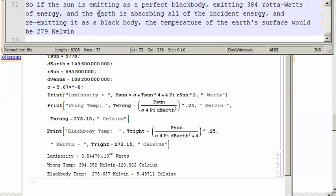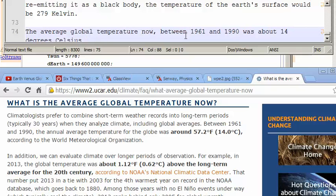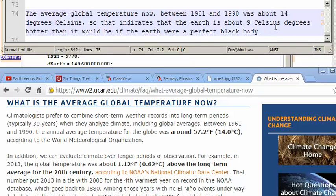So if the Sun is emitting as a perfect black body, emitting 384 yotta watts of energy, and the Earth is absorbing all of the incident energy and re-emitting it as a black body, the temperature of the Earth's surface would be 279 Kelvin, or about 5.5 degrees Celsius. So the average global temperature now between 1961 and 1990 was about 14 degrees Celsius. So that indicates that the Earth is about 9 degrees, 9 Celsius degrees hotter than it would be if the Earth were a perfect black body.